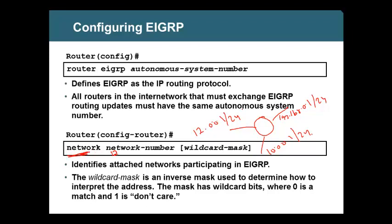When I say network 12.0.0.0, EIGRP will start sending hellos on the link that matches 12. When I say 192.168.0.0, it will start running on that interface. When I say 10.0.0.0, it will start running on that interface. This is not an interface-level command — it should be done under router mode, router EIGRP mode.